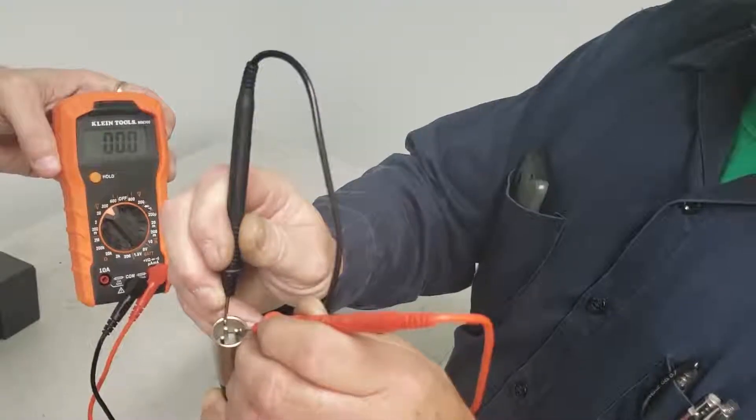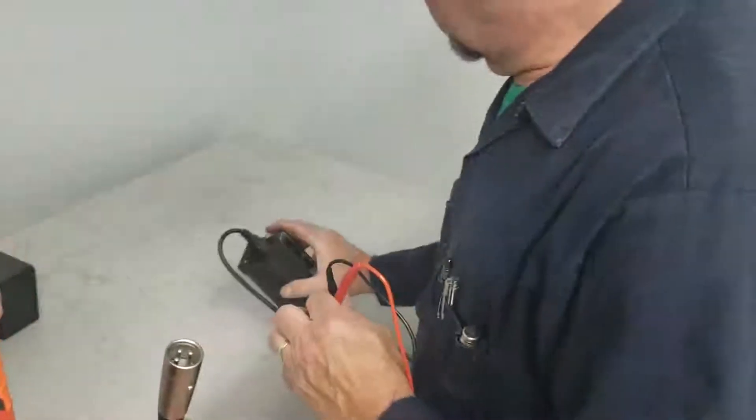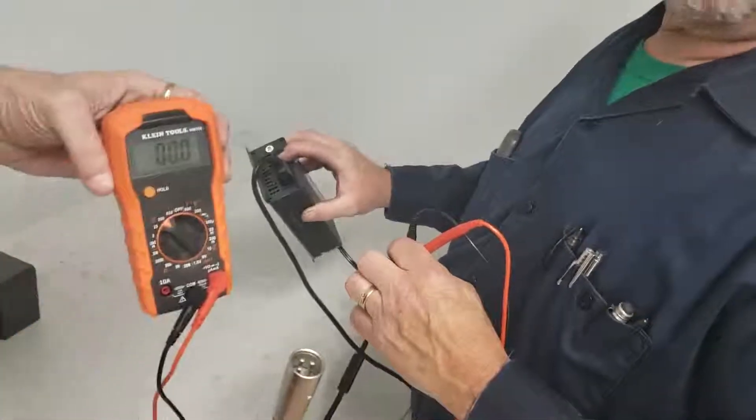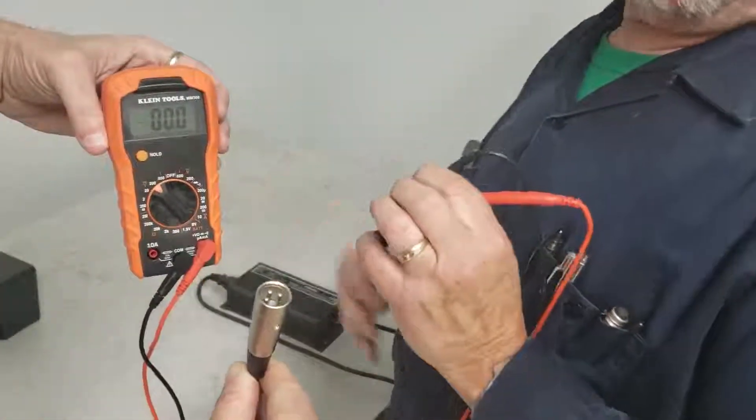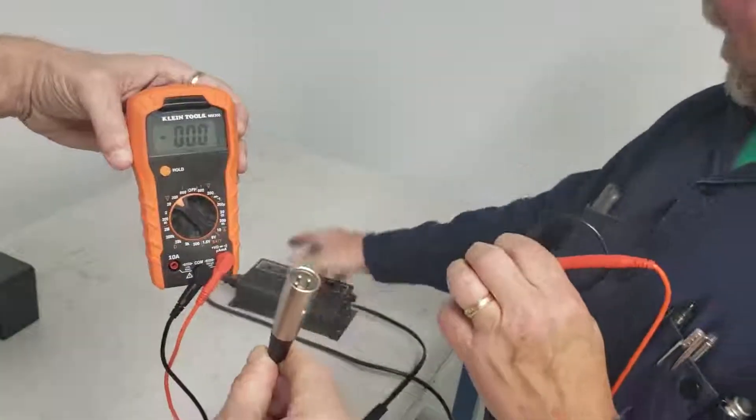So we're going to probe this being very careful not to touch anything except for that probe. Wait a minute, getting ahead of myself. You got to turn the charger on first. That really helps for that voltage to get up here. Okay, now we have a red light on. That shows us that we do have power.